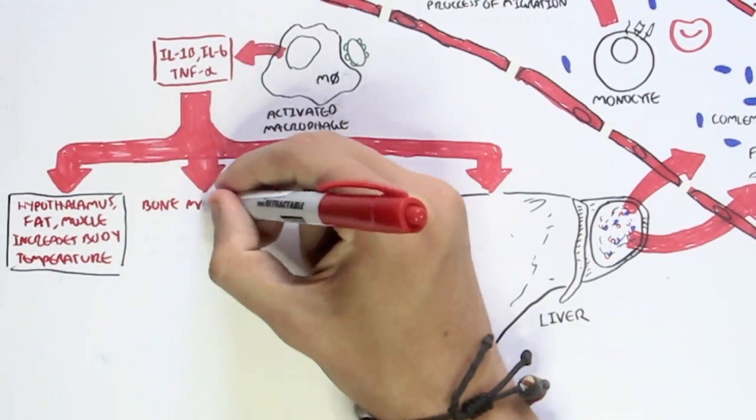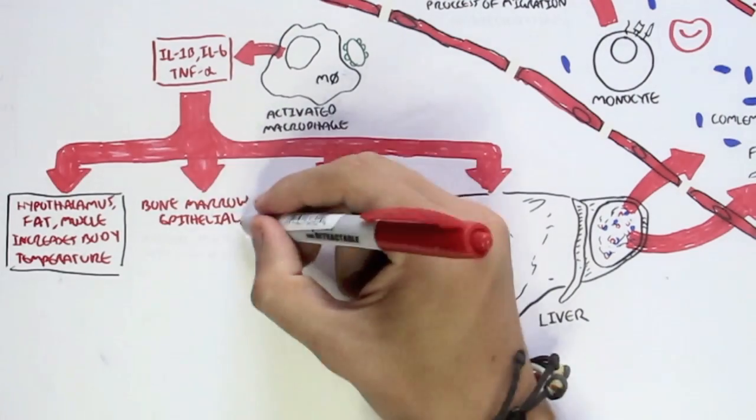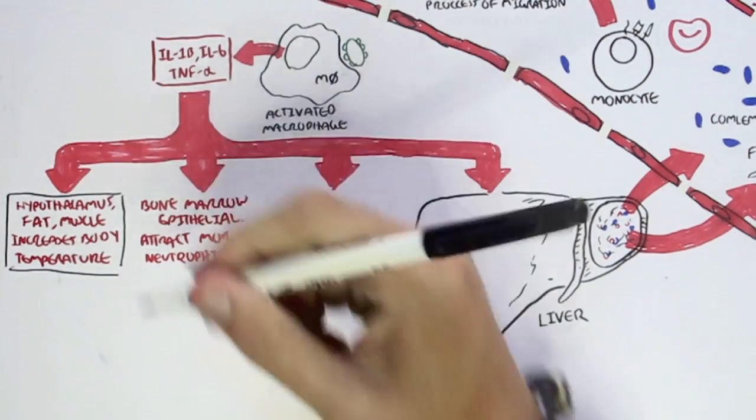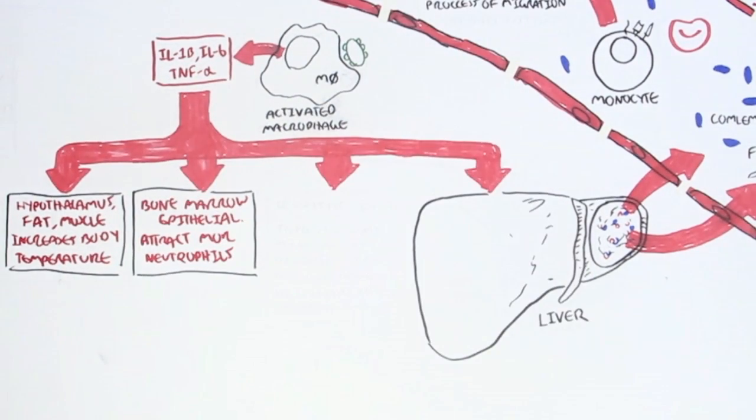The activated macrophage also secretes cytokines which target the bone marrow epithelial cells to basically produce more neutrophils, causing more neutrophils to come to the injured area or infiltrated area.